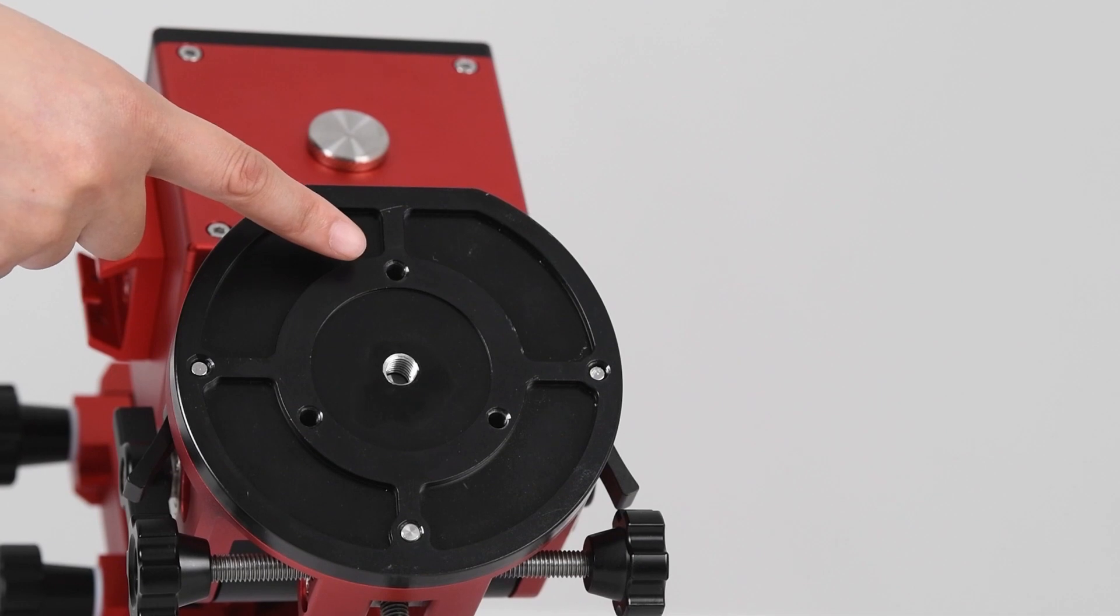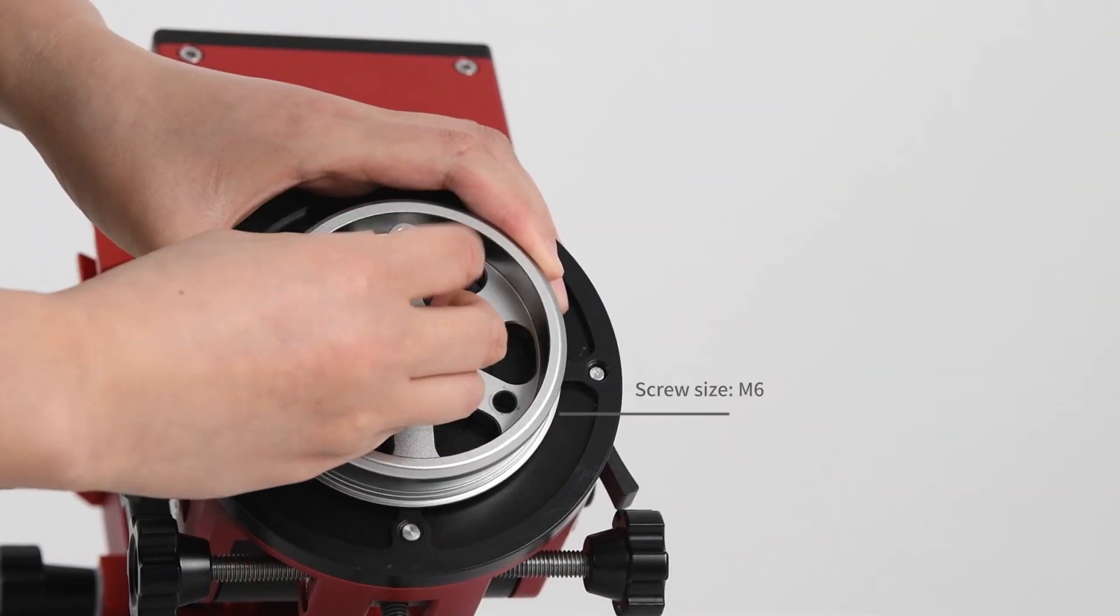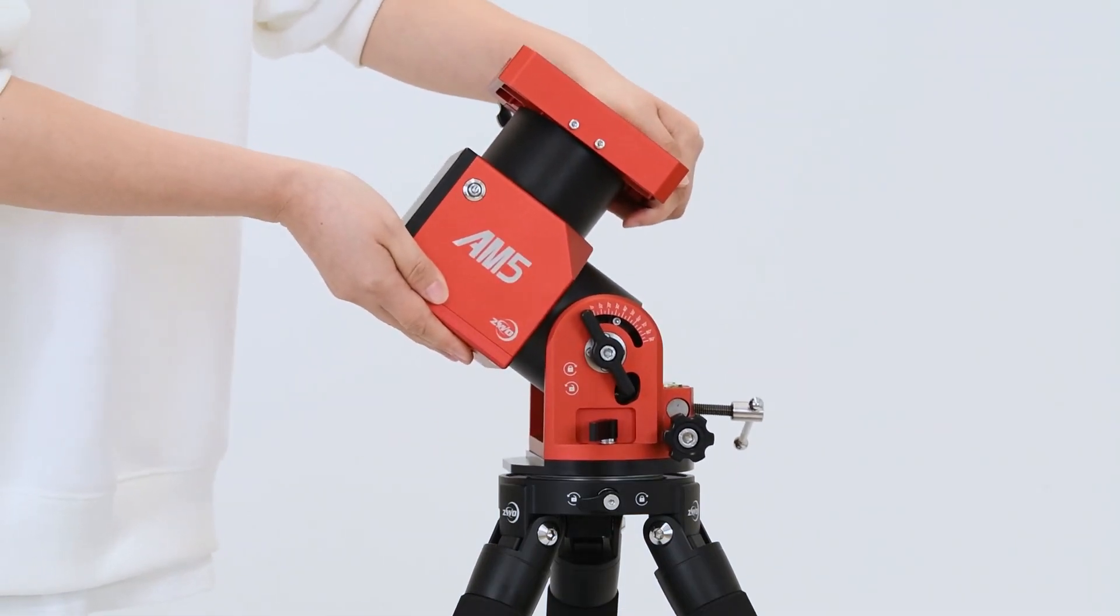Attach the head plate. Align the three mounting points on the installation disc to equivalent holes in the main body of the AM5. Insert three M6 hex screws into the holes and use the included M6 hex wrench to assemble.